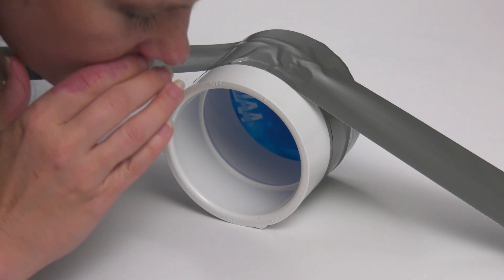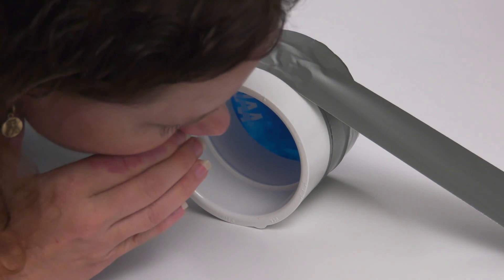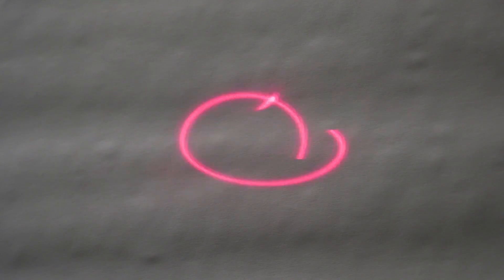Now, speak into the open end of the pipe and watch the effect it has on the dot. Change the volume of your voice and see how that affects the dot. Try a big laugh, a whisper, or whistle.